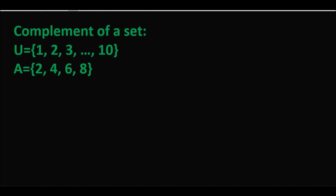اس کے بعد ہمارے پاس آتا ہے complement of the set — یہ چوتھا operation ہے sets کے اوپر۔ Complement of the set ہمیشہ universal set کی help سے find out کیا جاتا ہے۔ Complement of set کے لیے symbols ہیں: A' (A dash) یا A^c (A with superscript c)۔ آپ کی book میں A' use ہوا ہے لیکن A^c بھی پوچھا جا سکتا ہے، تو یہ دونوں آپ کے knowledge میں ہونے چاہئیں۔